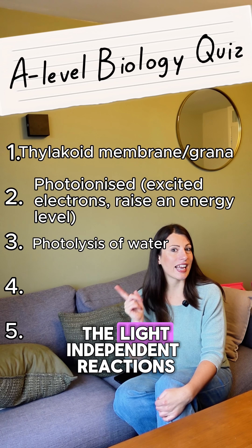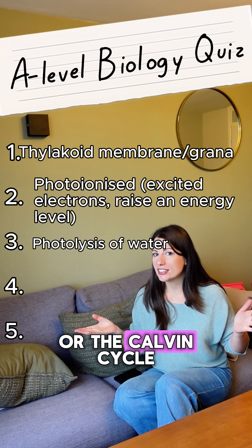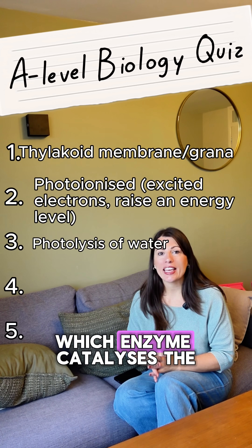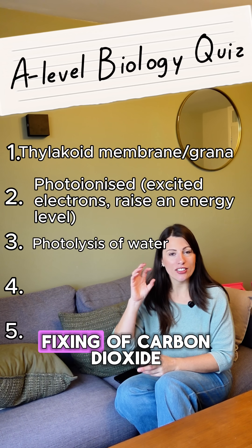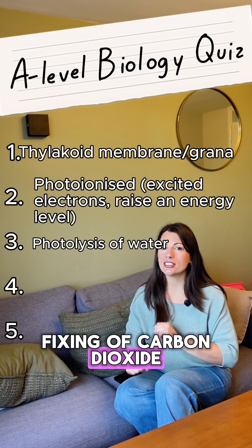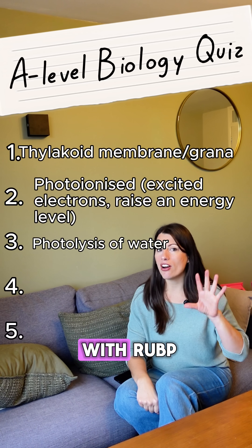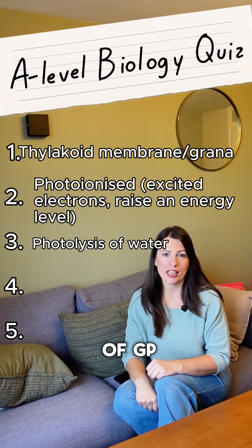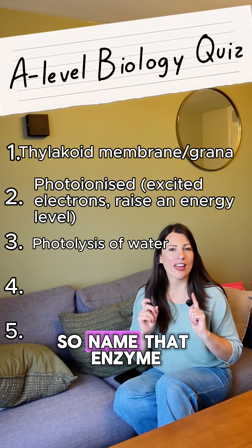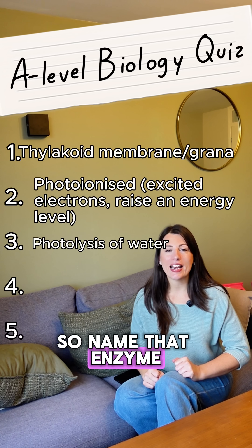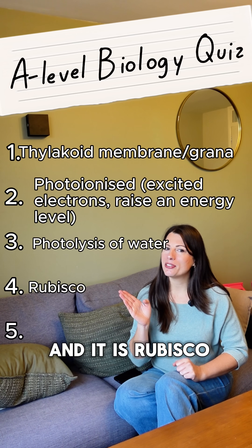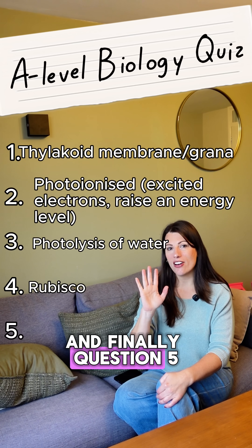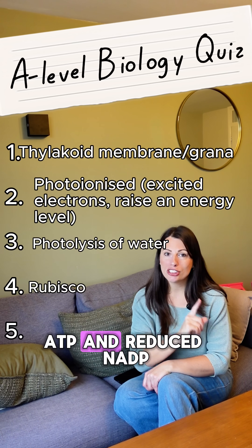Question four: we're moving on to the light independent reactions, or the Calvin cycle. Which enzyme catalyzes the fixing of carbon dioxide with RuBP to make two molecules of GP? Name that enzyme — and it is RuBisCO.